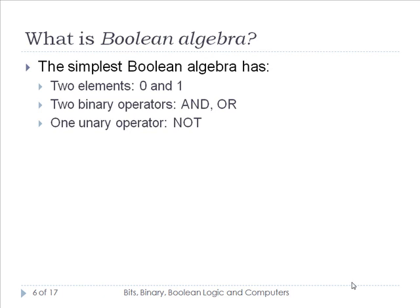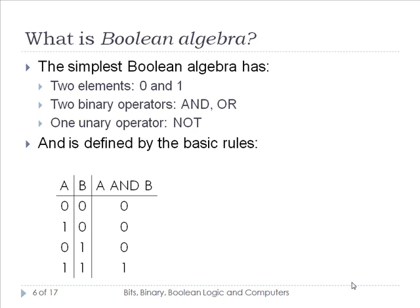Boolean algebra also has a single unary operator: NOT. These operators are defined by basic rules. The AND operator requires two inputs, represented in the A and B columns, with the output A AND B in the third column. The AND operation results in a 1 if and only if both A and B are positive. So: 0 AND 0 = 0, 1 AND 0 = 0, 0 AND 1 = 0, and 1 AND 1 = 1. That's why it's called the AND operator.